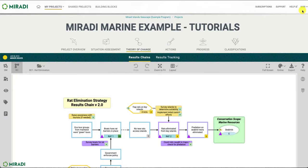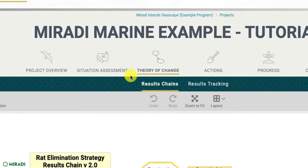In your Mirati project, navigate to diagram view by clicking on the situation assessment tab or the theory of change tab. Select the results chain or situation model button to view the diagram canvas.